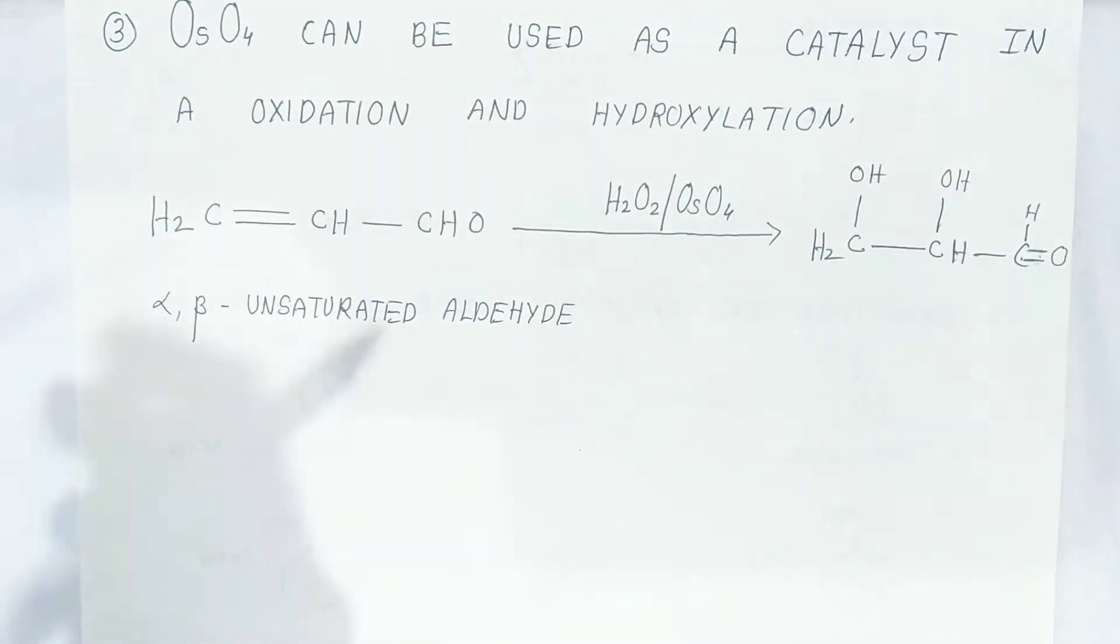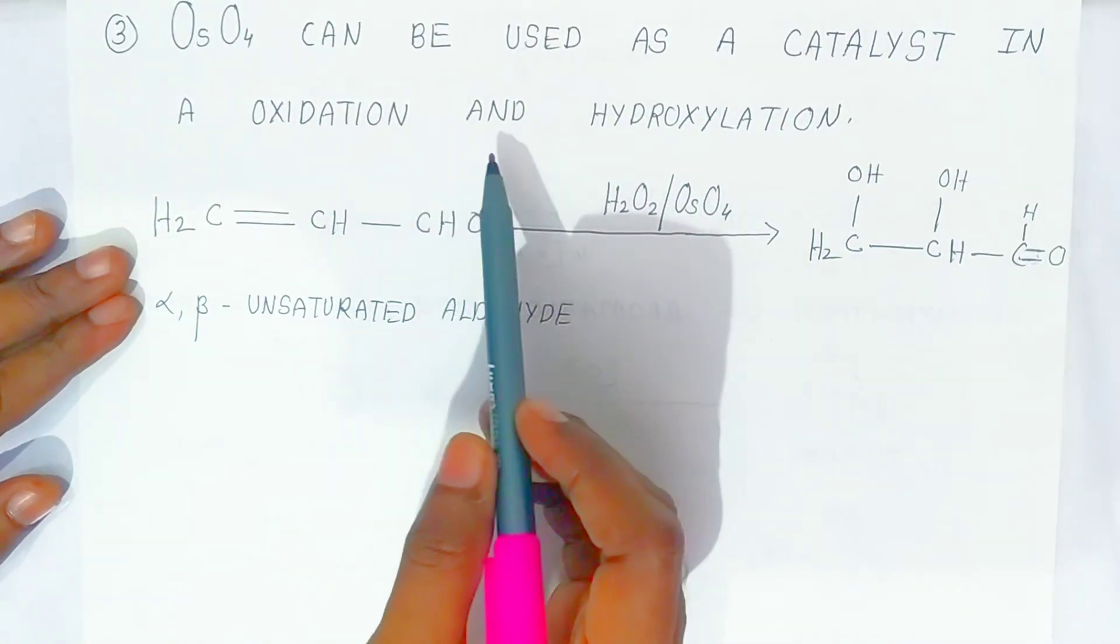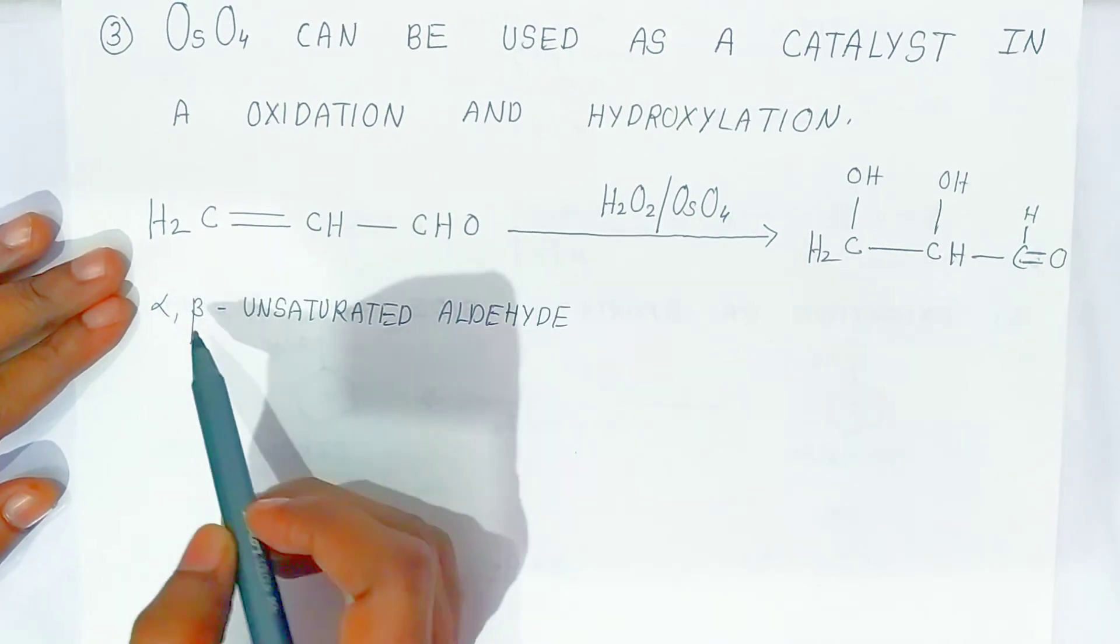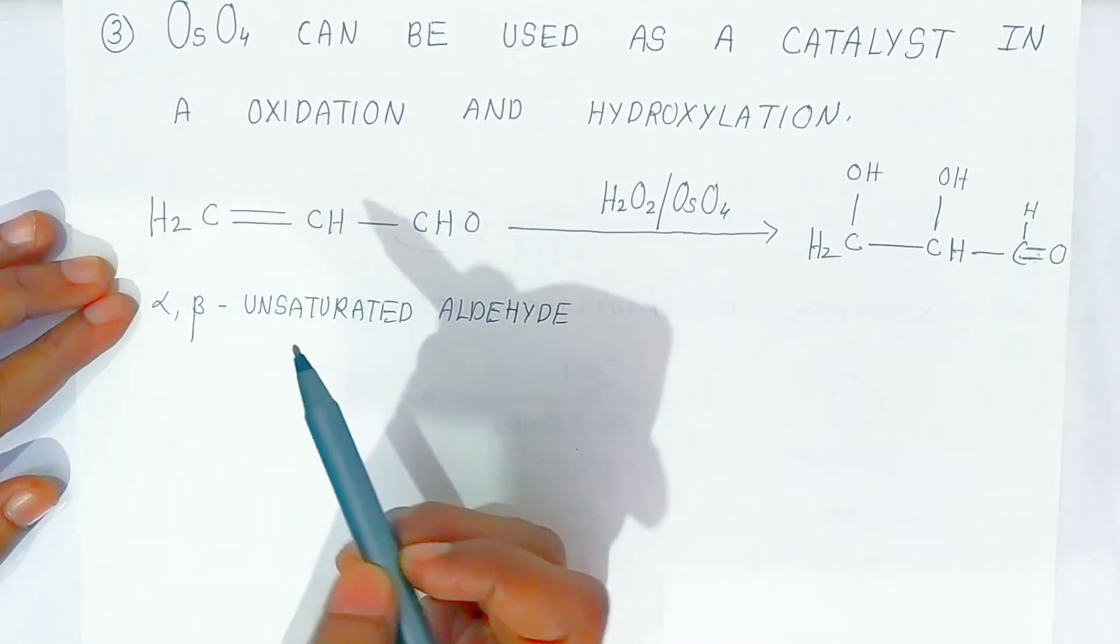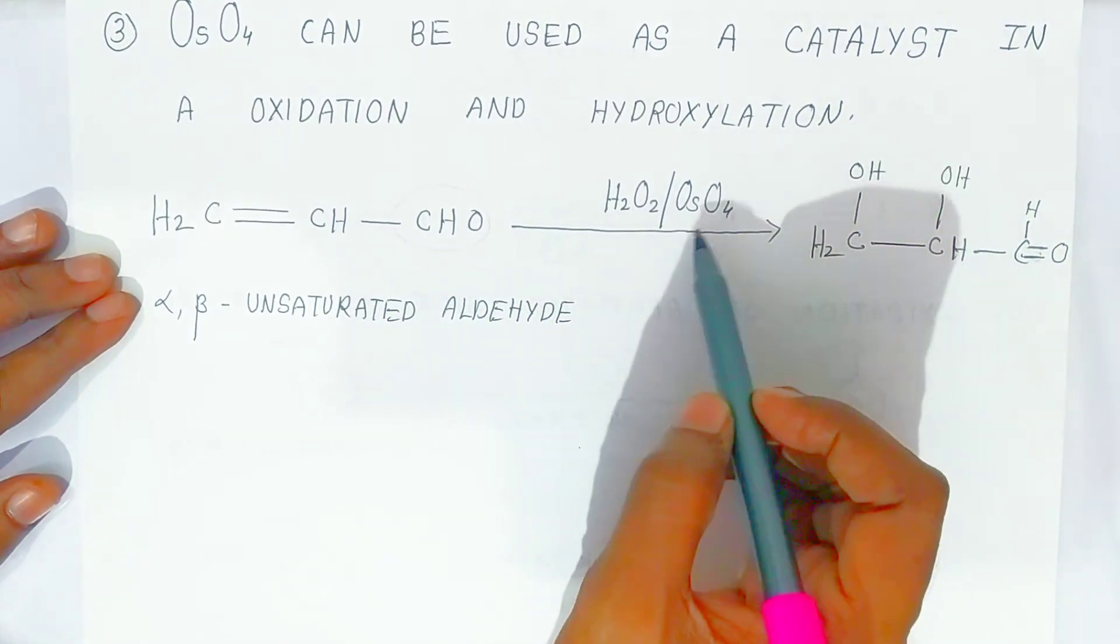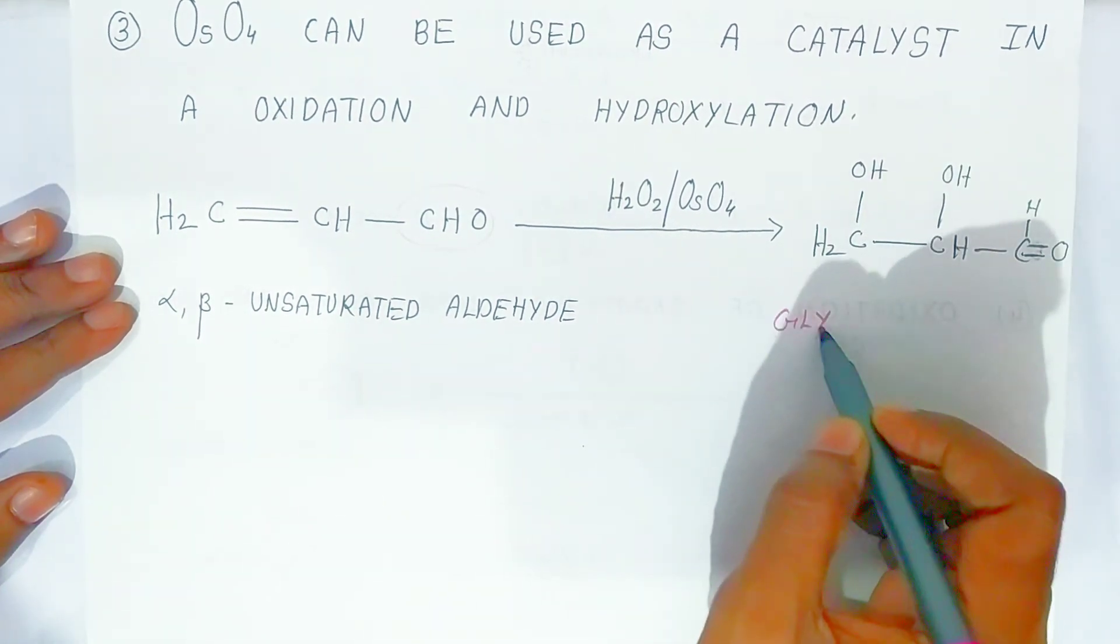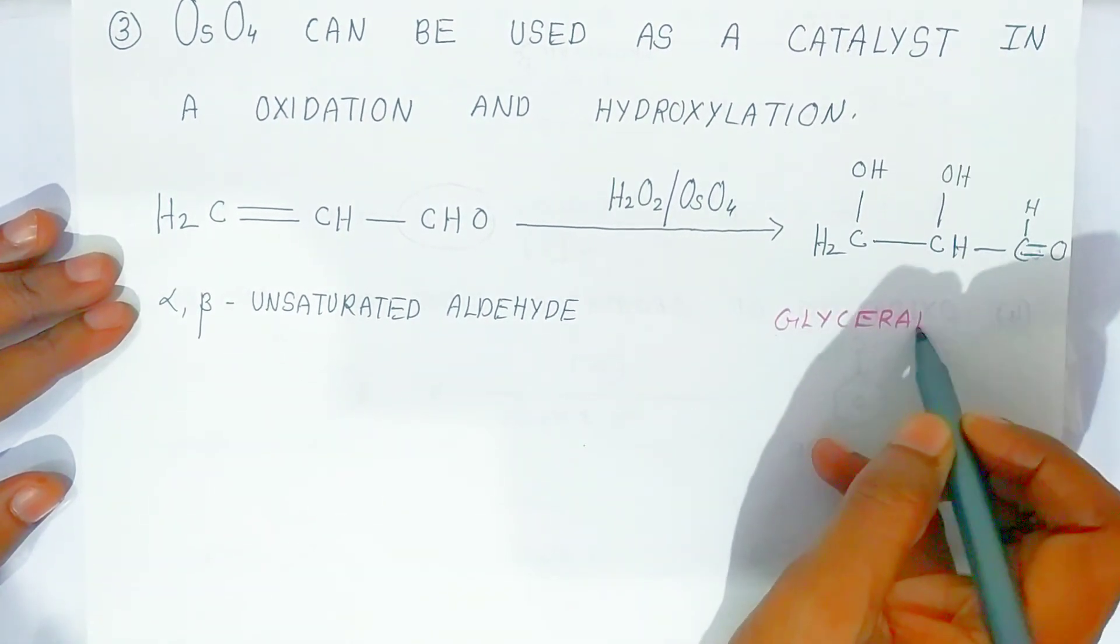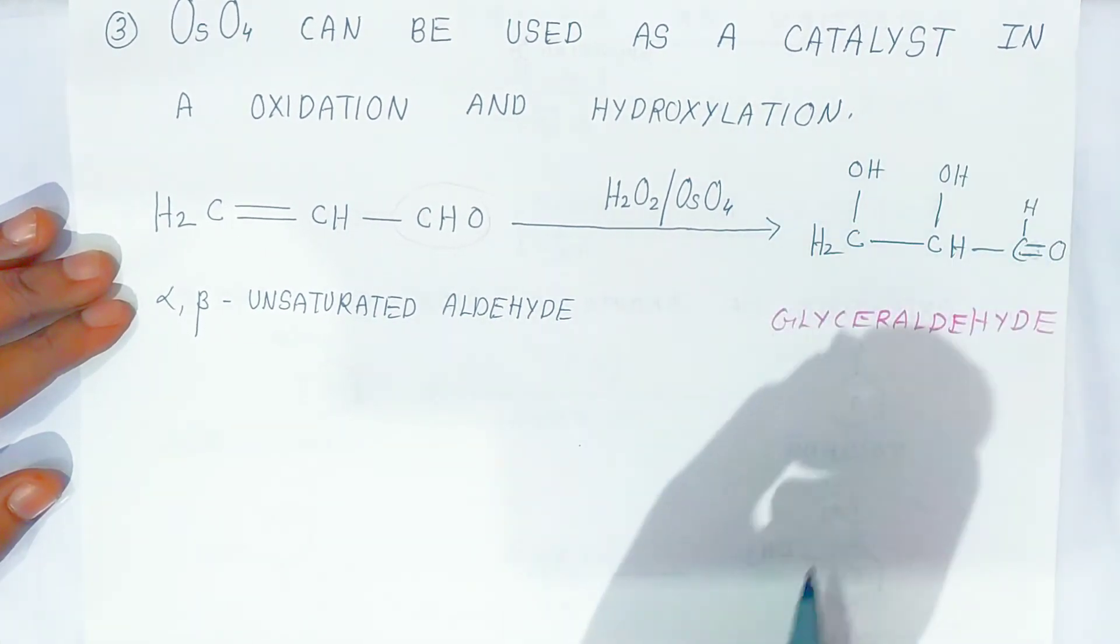Now one more type of oxidation we are going to see. Osmium tetroxide can be used as a catalyst in oxidation and hydroxylation. Here students, you have alpha, beta unsaturated aldehyde. This is aldehyde and here it is unsaturated compound. In presence of osmium tetroxide and H2O2, it is converted into glyceraldehyde. This is the glyceraldehyde. So these are very important compounds students.